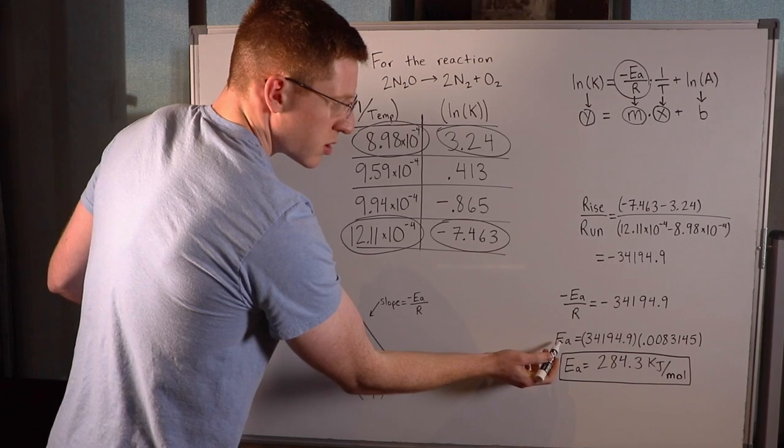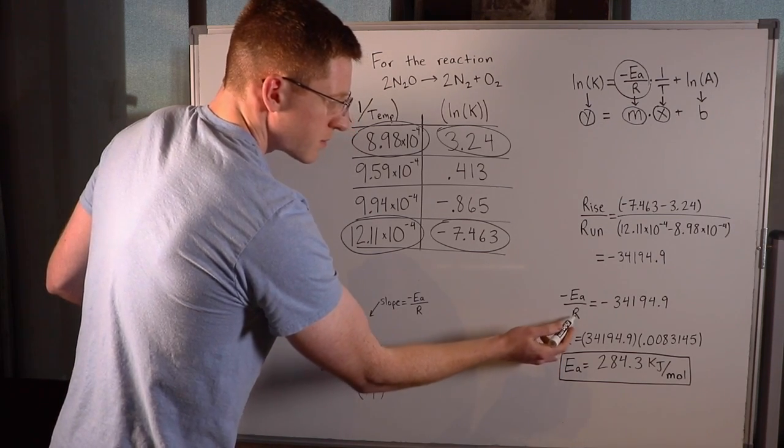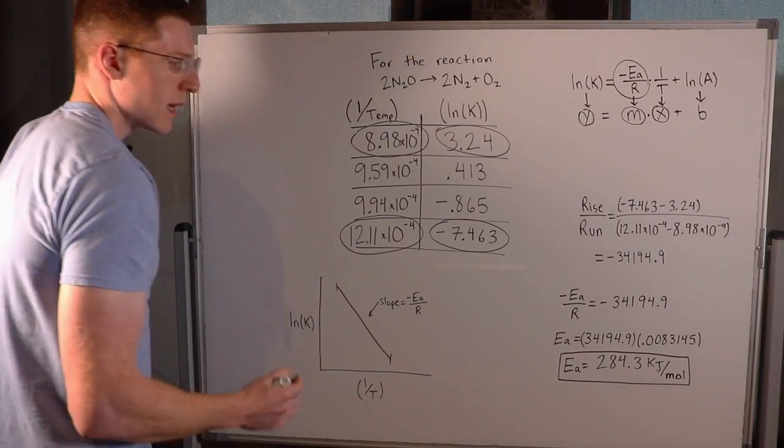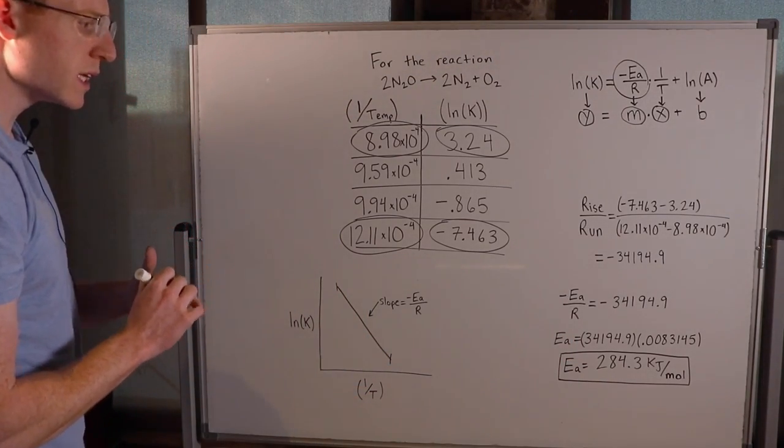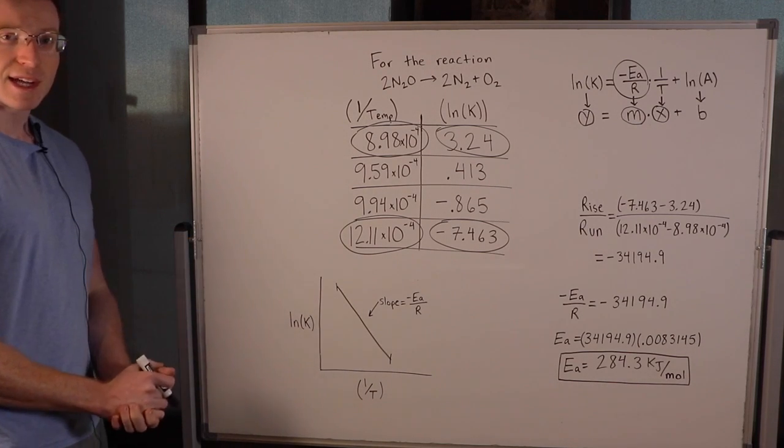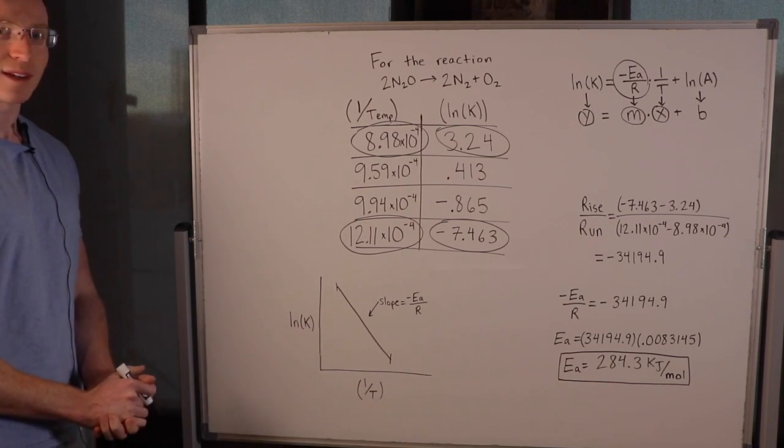I then solved for Ea by multiplying both sides by R and by negative one, finding Ea to be 284.3 kilojoules per mole. I hope this video helped you. If it did, please hit the thumbs up button, and I'll see you in the next one.